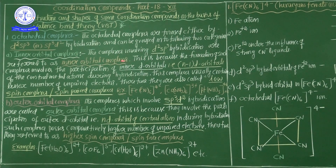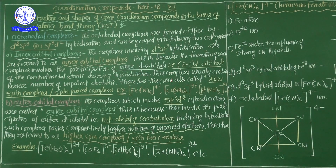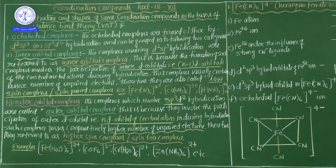Complexes involving d²sp³ hybridization are referred to as inner orbital complexes. This is because only inner orbitals participate in the hybridization. If any octahedral complex is involved in d²sp³ hybridization, inner orbitals exclusively participate.